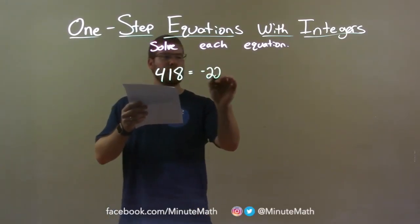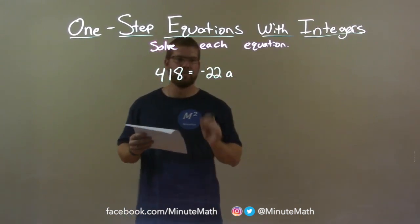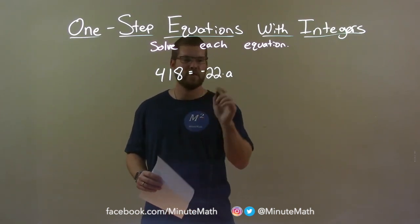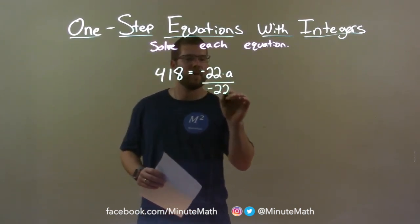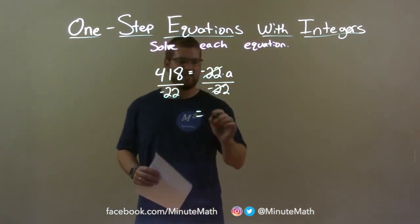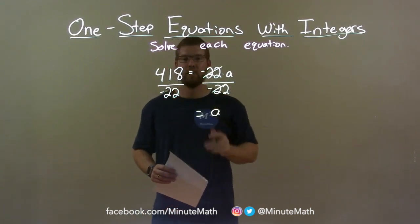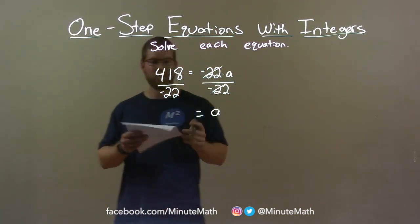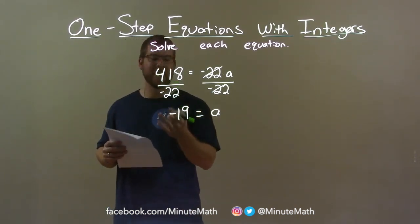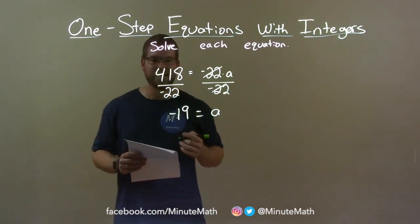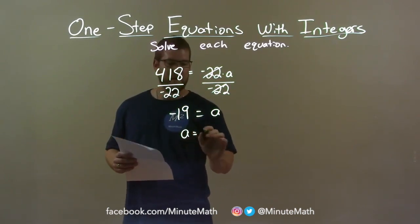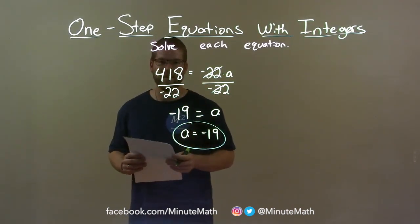418 equals negative 22 times a. I have multiplication right there, so I need to get a by itself. Opposite of multiplication is division. I'm going to divide both sides by negative 22. That cancels out the negative 22s on the right, leaving a by itself. Now, 418 divided by negative 22 is negative 19 — positive divided by a negative is a negative, and 418 divided by 22 is 19. We can rewrite this with a first: a equals negative 19 is our final answer.